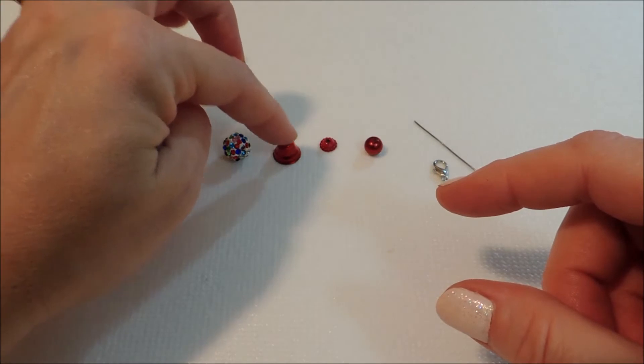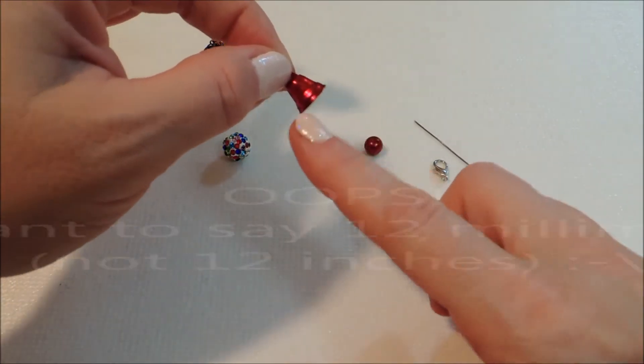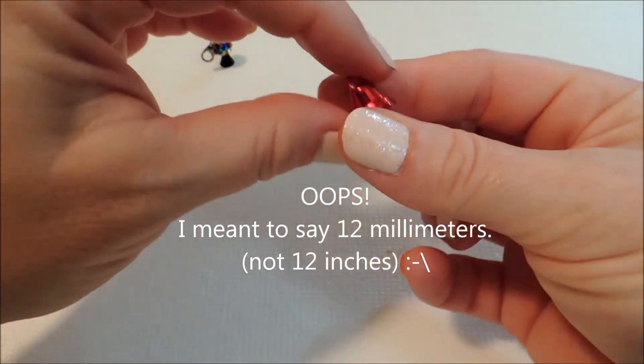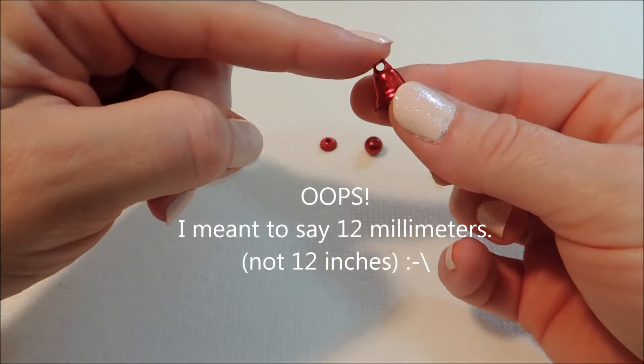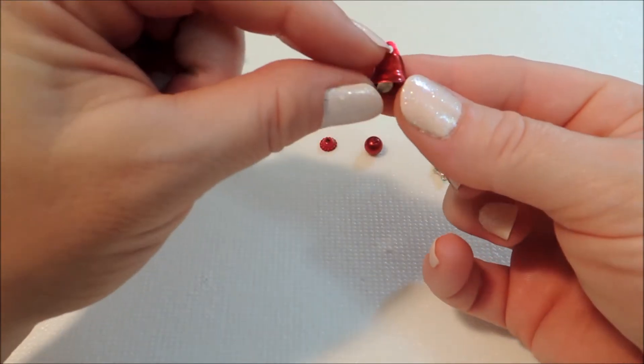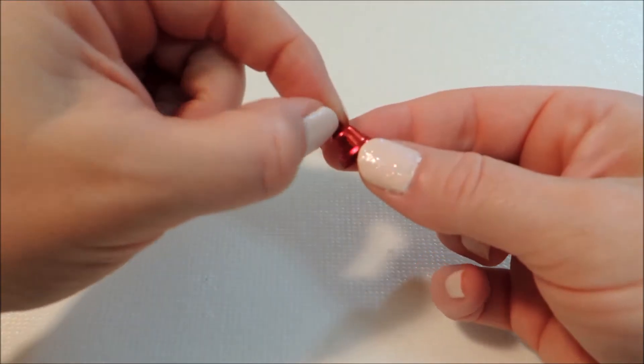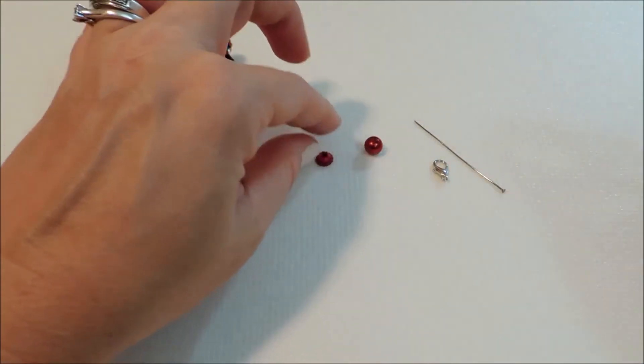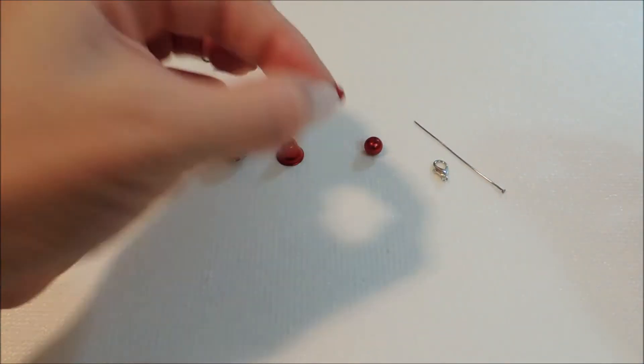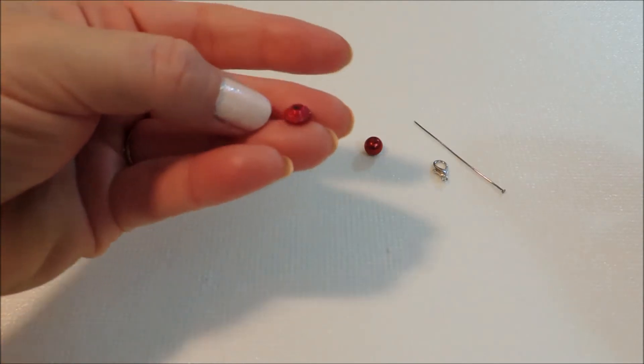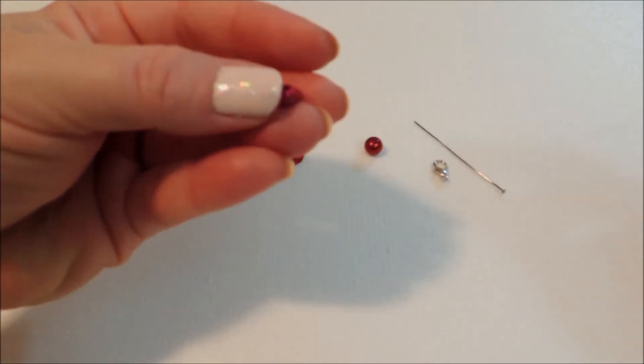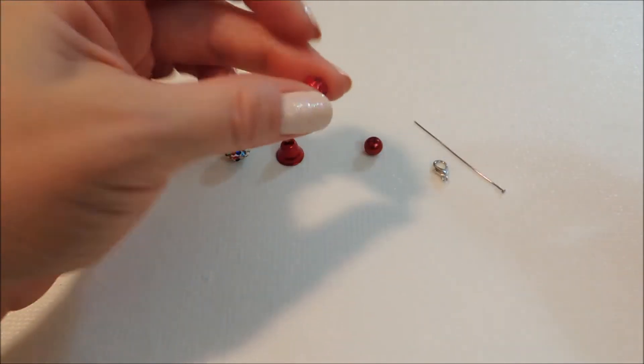That also measures at about 12 millimeters wide, and once we remove this loop at the top it'll be about nine millimeters tall. Then for the topper on the machine I have an eight millimeter bead cap here.